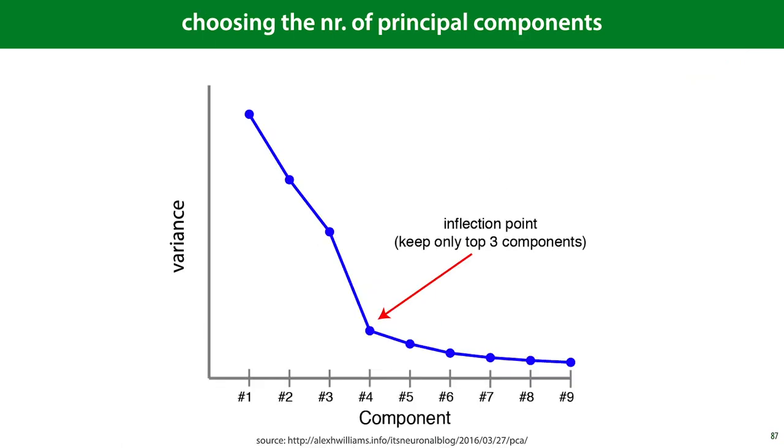To apply PCA, we need to choose the number of dimensions to reduce to. We can just treat this as a hyperparameter and test different values. But to help us out, if we plot the variance or the reconstruction loss against the number of components, we often see a natural inflection point. In this case, we can retain the majority of the variance in the data by keeping only the first three principal components. The higher components, numbers 4 and up, add a very small amount of variance each, but not much.